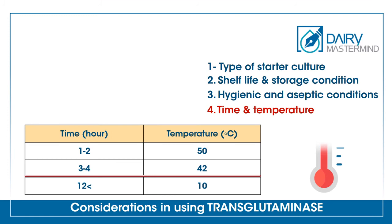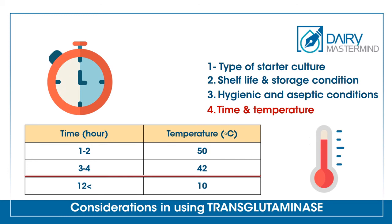At lower temperatures, it takes longer to achieve the desired result with TG enzyme. For example, at 42°C — which is the temperature to add starter culture — it takes 3 to 4 hours to complete the reaction, which is equal to the time required for the fermentation process.